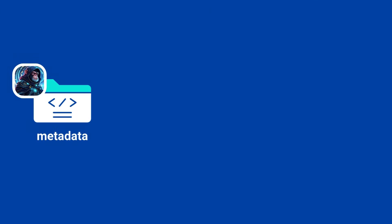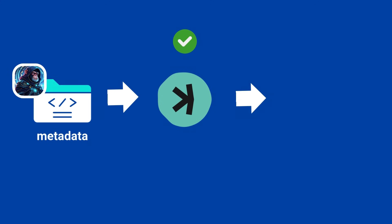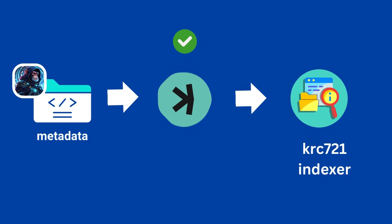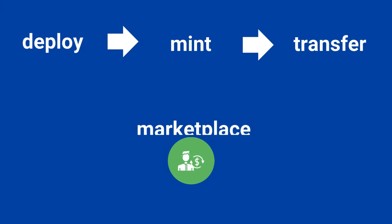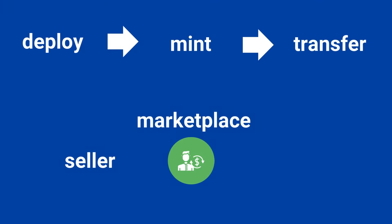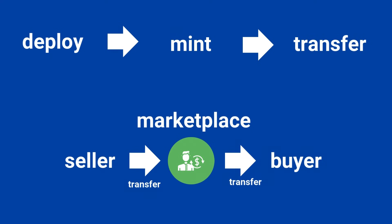However, a deploy operation can succeed on the chain but fail in the indexer due to data formatting issues. That's why it's crucial to connect to the indexer API after deployment to confirm the status of your operation. Once tokens are deployed and minting begins, they can also be transferred by anyone who mints them. After all tokens in a collection are minted, they can only be transferred. Marketplaces act as intermediaries for selling tokens, requiring them to be transferred to marketplace wallets for custody and later to buyers after the transaction is completed.